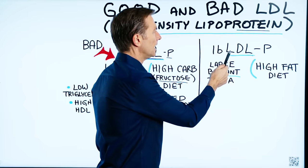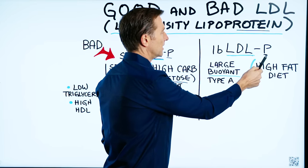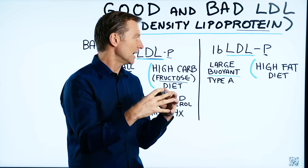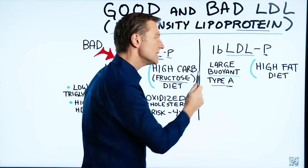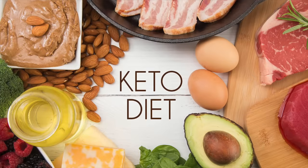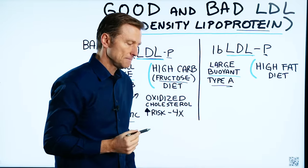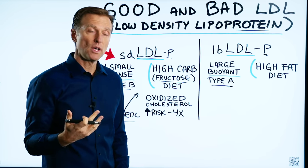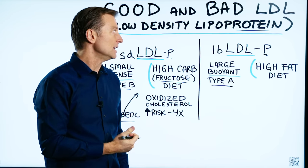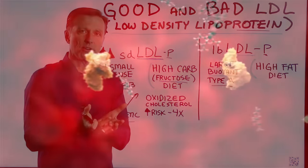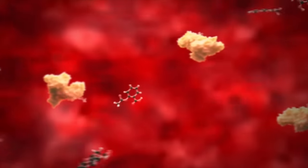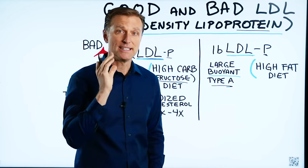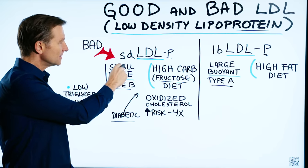When we get to LB LDL-P — LB stands for large, buoyant — this is the large, fluffy type of LDL. It's Type A. You're going to see this when someone does the ketogenic diet, because it's a higher-fat diet. When you're doing ketosis or intermittent fasting, you're releasing a lot of fat and cholesterol from the fat cells, so you need these LDL carriers to transport cholesterol to different places. But this type of LDL is benign — it's not the type that clogs up your arteries or creates damage. Type B is the bad one; Type A is the good one.